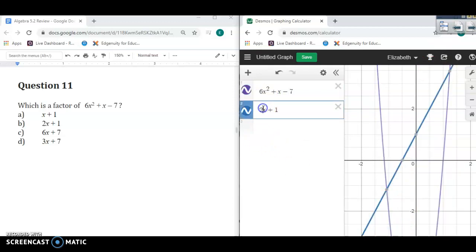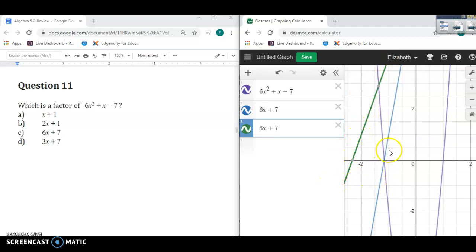Letter C says 6x plus 7, and there it is, it's going through my solution. But we can check the last one, 3x plus 7, just to make sure. No, that's way to the left side of it.